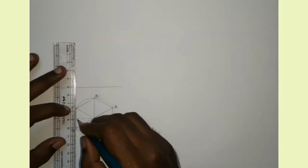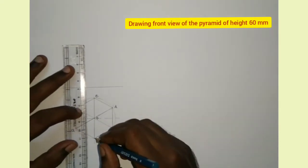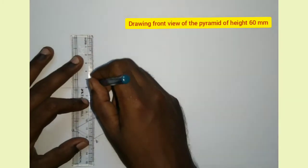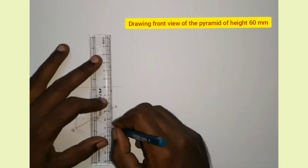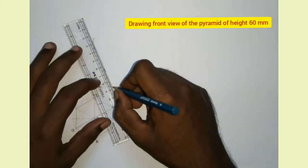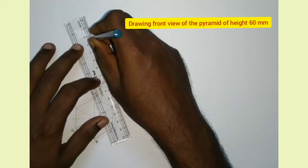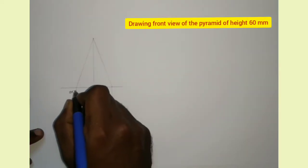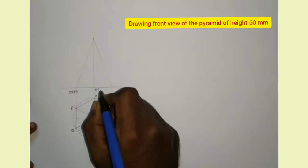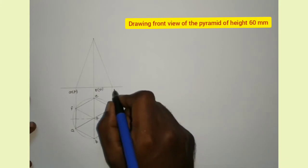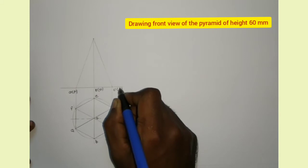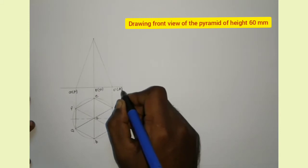Now I am going to draw the front view, so I am drawing projection lines. The height of the pyramid is 60 mm. First draw the front view using a two-edged pencil. I am marking points as A'(F'), B'(E'), C'(D'), and the apex of the pyramid is marked as O'.